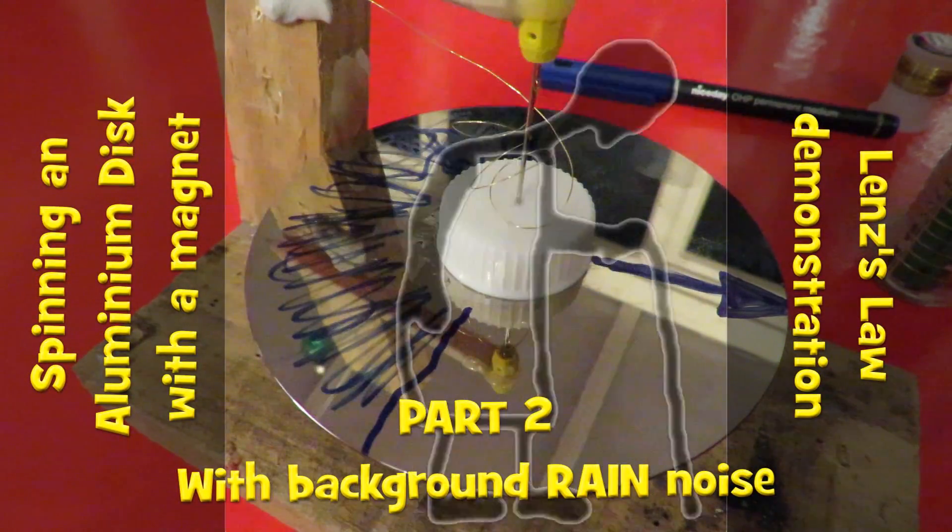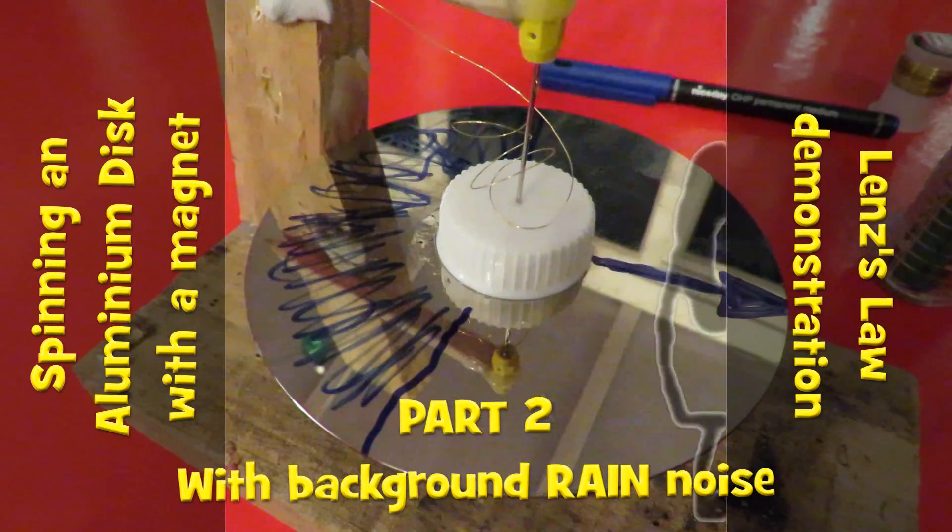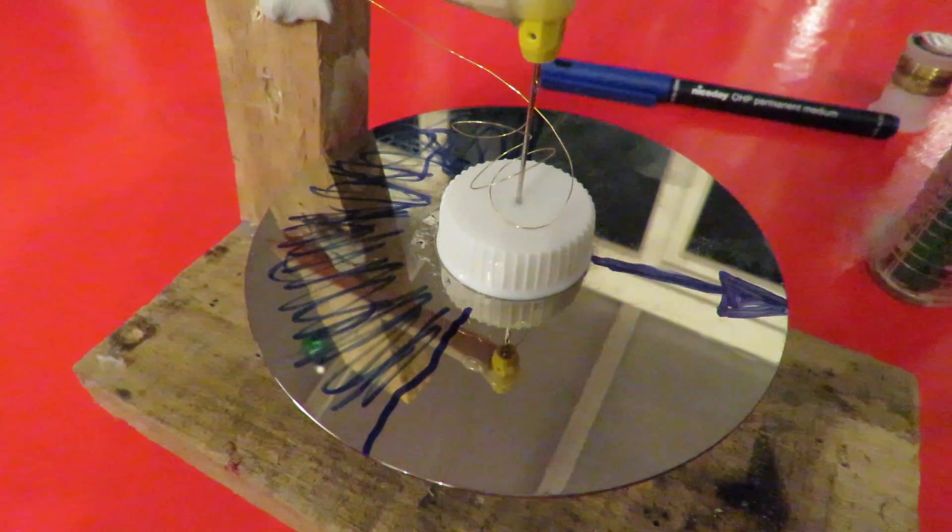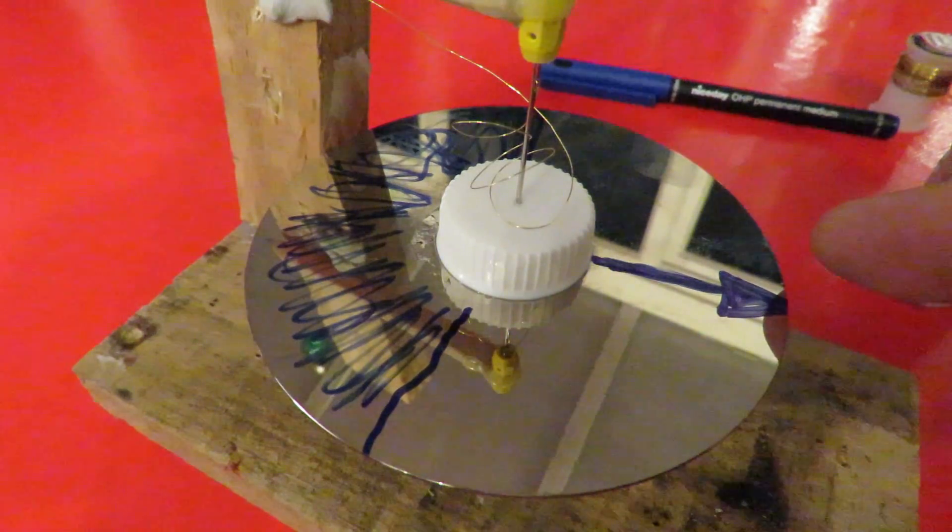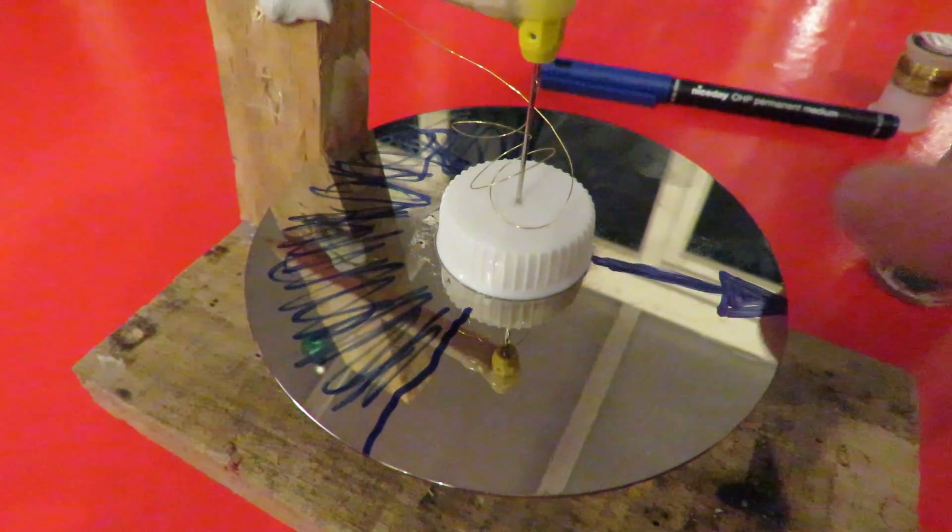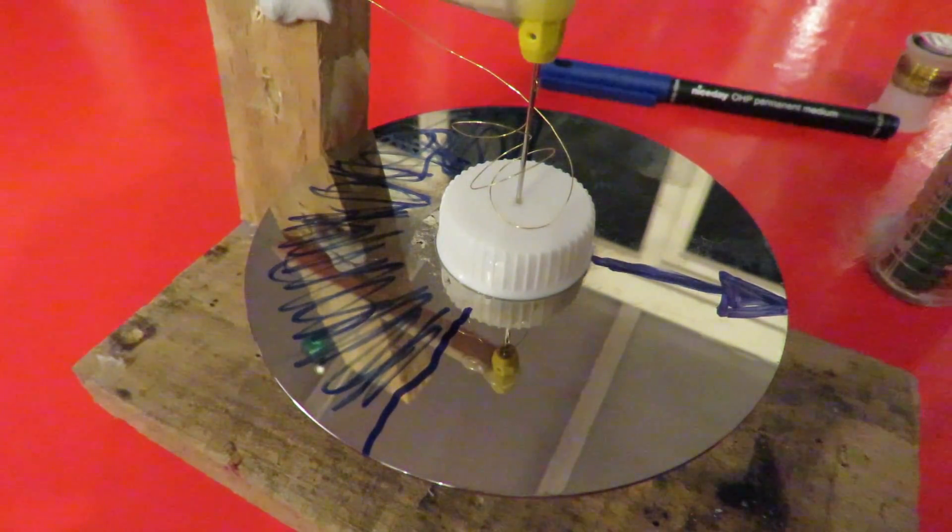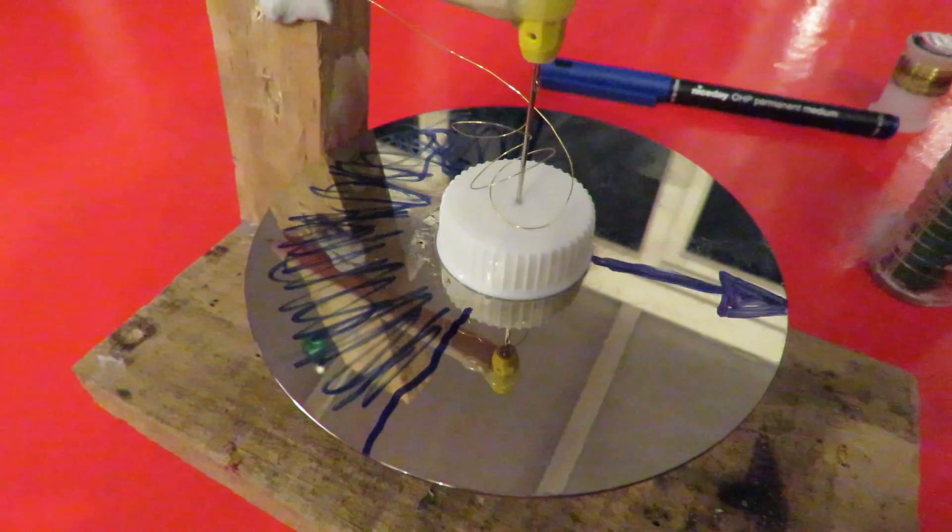Hi guys, we're in the conservatory again and it's raining outside, so sorry about the noise. This is part two of my spinning aluminium disc video, inspired by a comment by Mike Roberts on one of my previous projects saying that it looked very much like a mechanical speedometer.